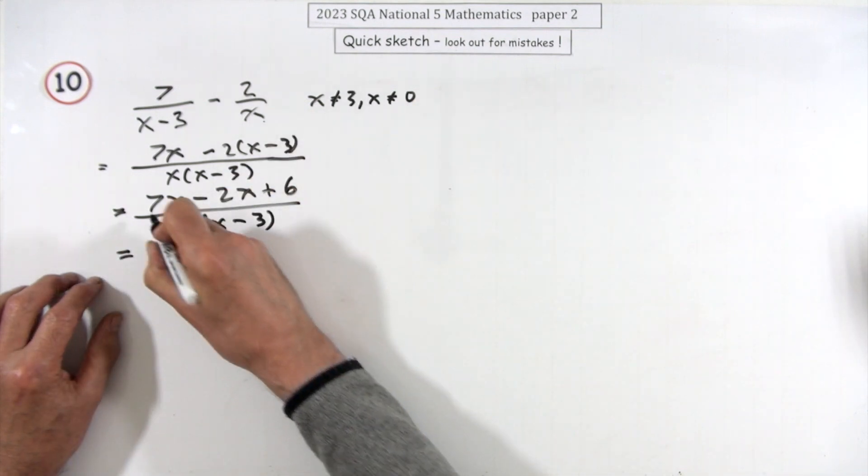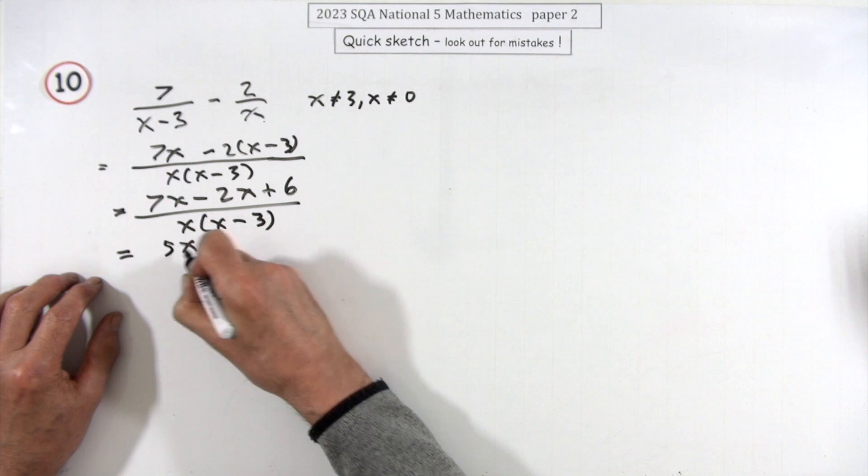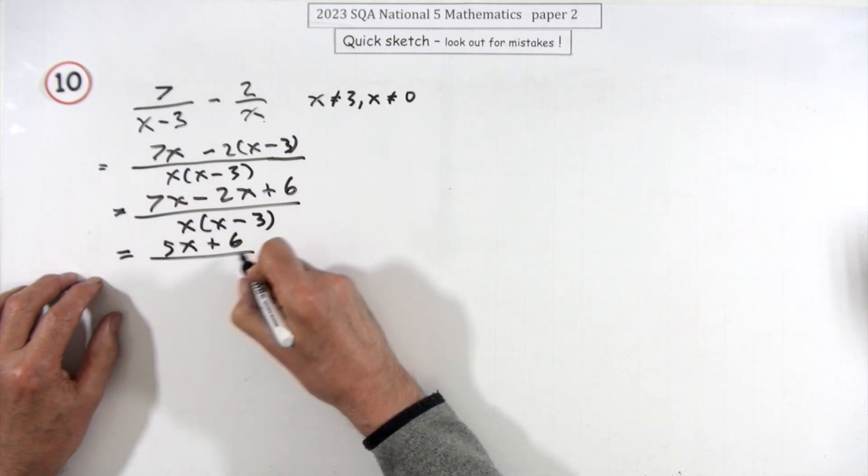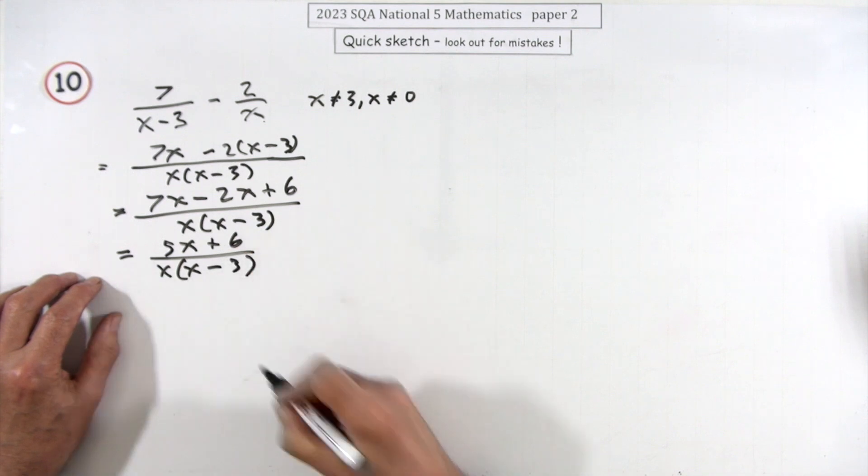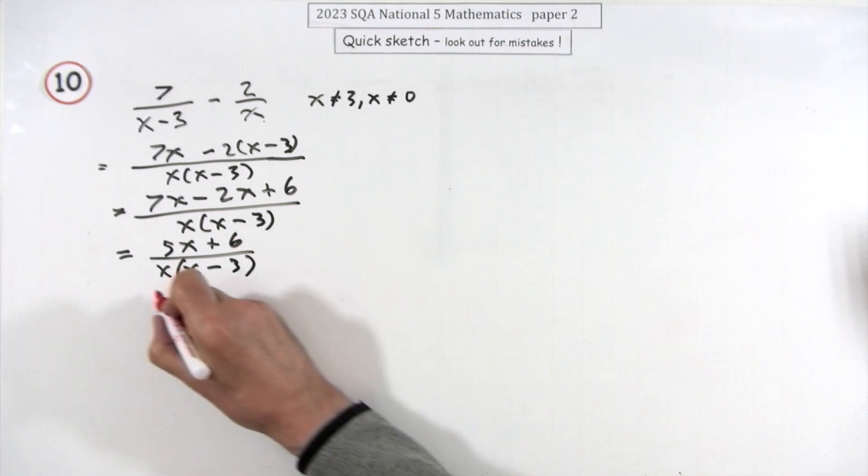Don't multiply at the bottom because that's nice and neat. Something might factorize. Top comes to 7x, 2x is 5x, nothing happens to the 6. That would factorize, so you're just stuck with that. There's your answer.